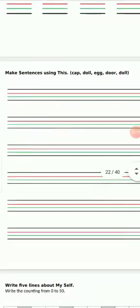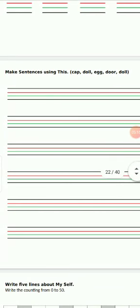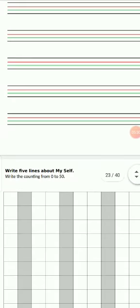Make sentences using 'this'. You have to make sentences for these words that are given: cap, doll, egg, door, doll. For example: This is a cap. This is a doll. This is an egg. Make sentences in the same way.